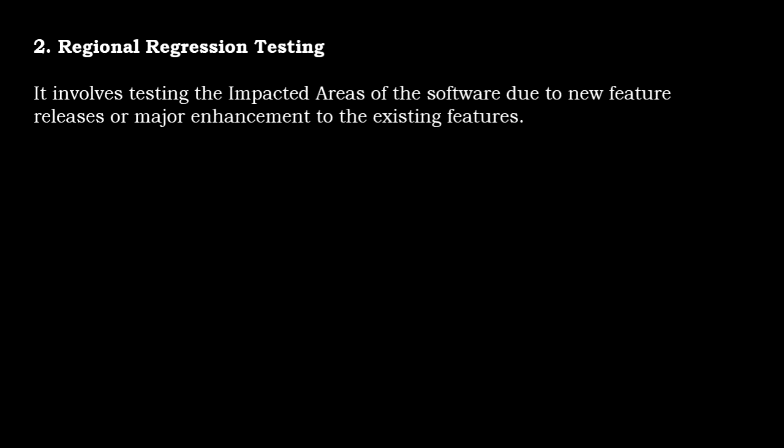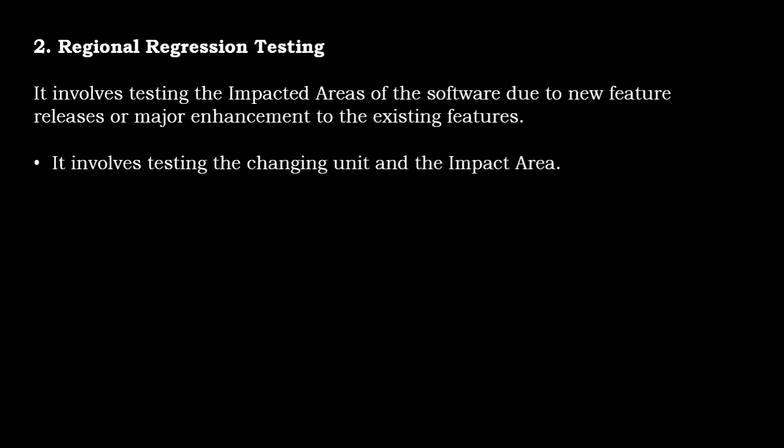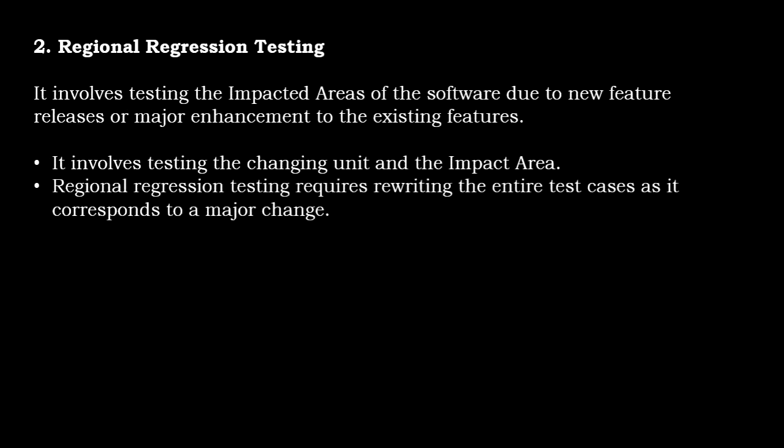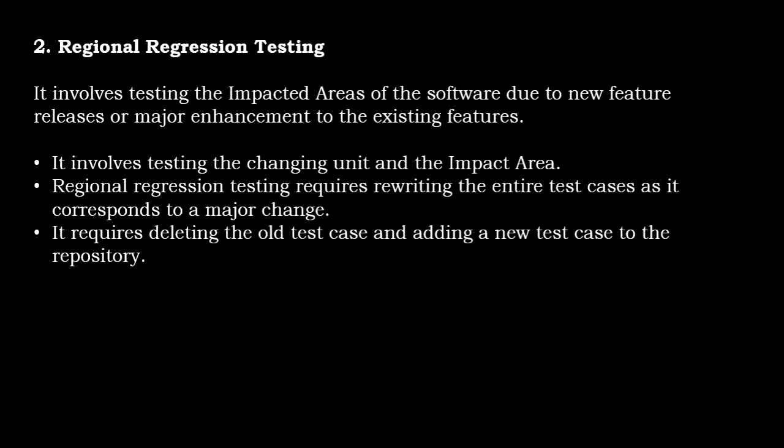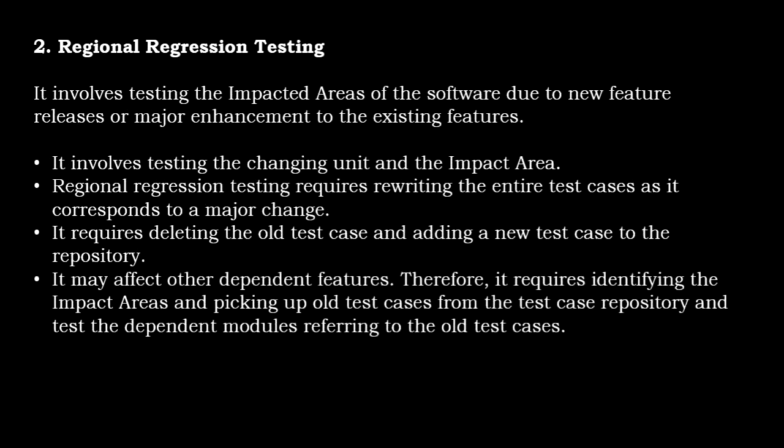Next is regional regression testing. It involves testing the impacted areas of the software due to new feature releases or major enhancements to existing features. It involves testing the changed unit and the impacted area. Regional regression testing requires rewriting entire test cases as it corresponds to a major change. It requires deleting old test cases and adding new test cases to the repository, and identifying impacted areas and picking up old test cases from the repository to test dependent modules.